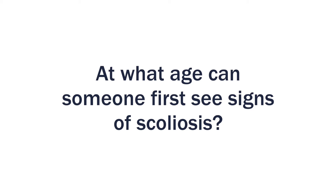At what age can someone first see signs of scoliosis? Congenital or early onset scoliosis can present very early in life as an infant or a toddler. Idiopathic scoliosis most commonly presents during adolescence. The most common form of scoliosis in adults, which is thought to be due to degenerative changes or wear and tear, can present as early as the 40s, but much more commonly presents in individuals who are in their 60s, 70s, or beyond.